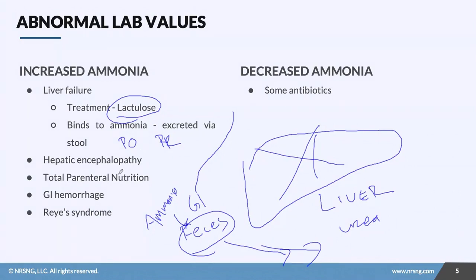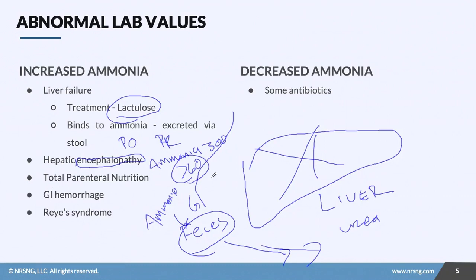We'll see increased ammonia levels with hepatic encephalopathy — if a patient has unexplained changes in neuro status, we might check ammonia, and if it's greater than 60 we know something's going on. We might also see it with total parenteral nutrition, because the liver can't break down all that protein. It can occur with GI hemorrhage, because blood is sitting in the GI tract rather than being processed by the liver, and also with Reye's syndrome in babies.